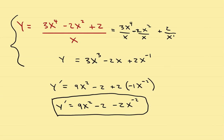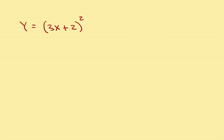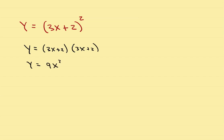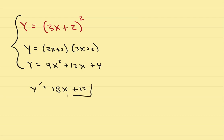If you have one that looks like (3x plus 2) squared, foil it first: (3x plus 2)(3x plus 2) gives y equals 9x squared plus 12x plus 4. Now take the derivative: y prime equals 18x plus 12, and you are done.